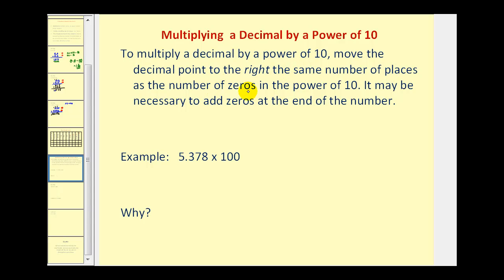the same number of places as the number of zeros in the power of ten. And it may be necessary to add zeros at the end of the number if there aren't enough digits.